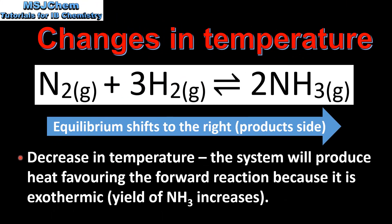Next, the effect of decreasing the temperature: the system will produce heat, favouring the forward reaction because it is exothermic, and the yield of ammonia will increase. So by decreasing the temperature, the equilibrium shifts to the right because the forward reaction is exothermic.